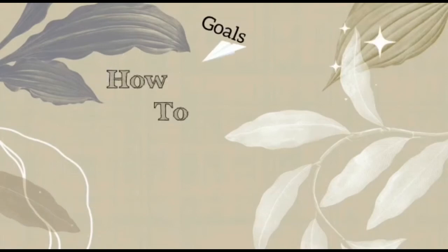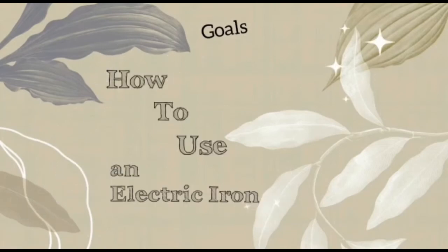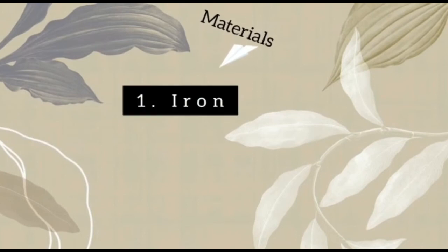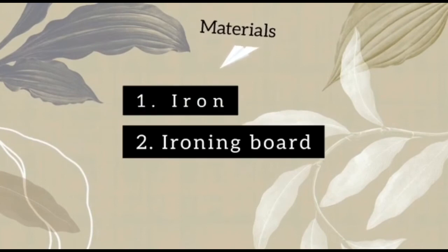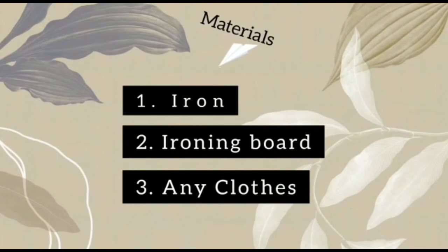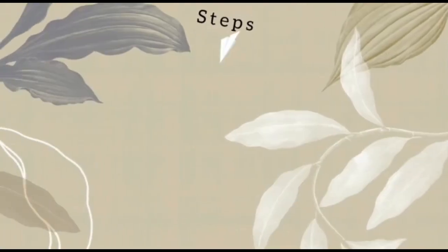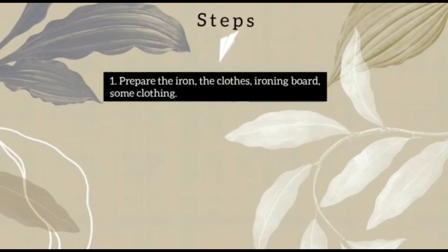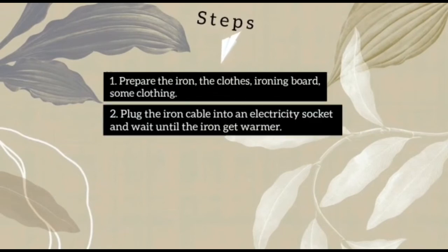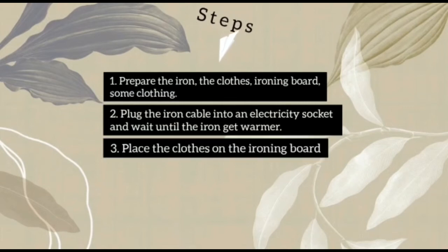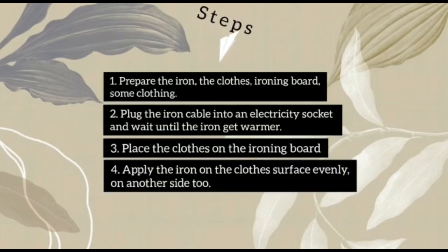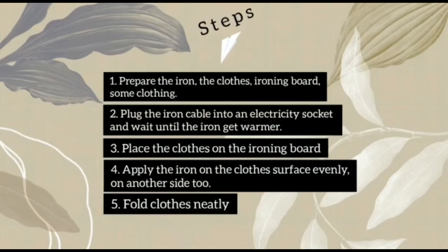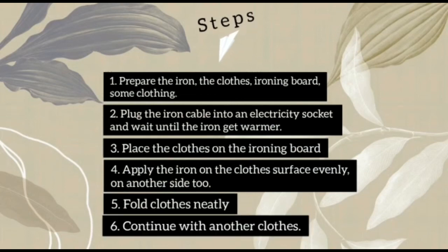How to use an electric iron. For the materials, we need an iron, an ironing board, and clothes. Steps of using an electric iron: first, we need to prepare the materials, and then don't forget to plug the iron cable. Next, place the clothes, and then we can apply the iron on the clothes. Fold the clothes neatly. Finally, continue with another piece of clothing.